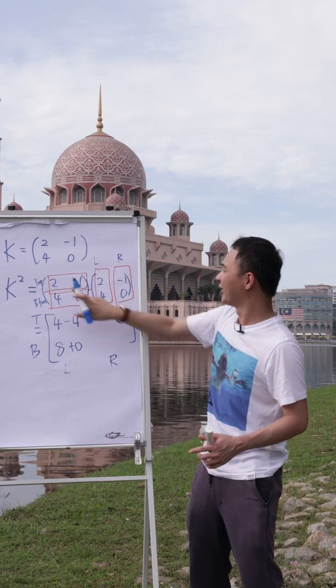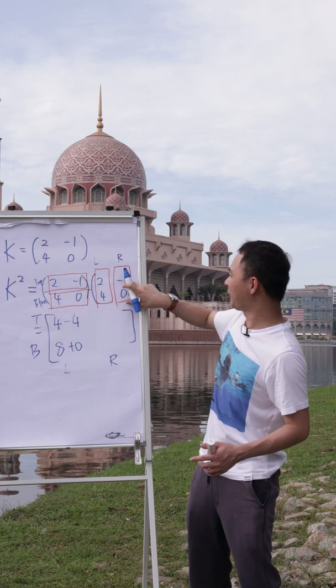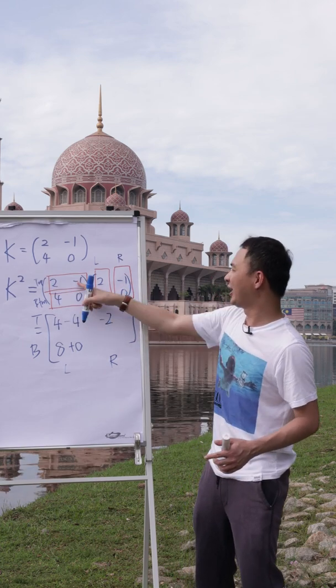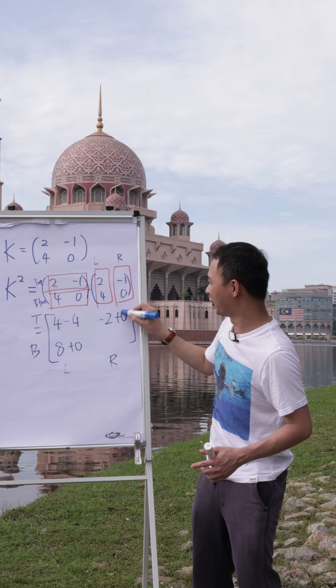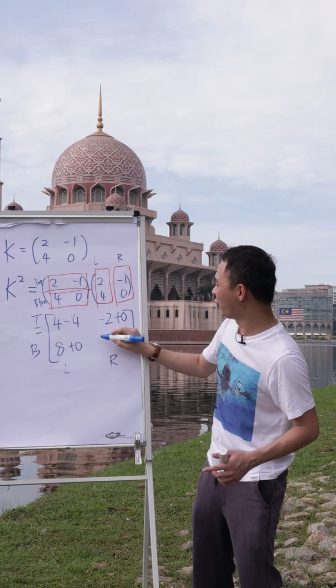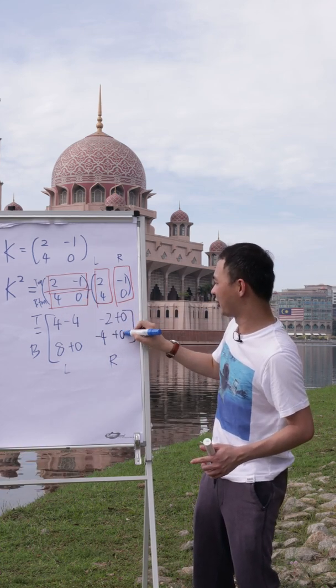Alright, then I will do the top right. So that means 2 multiplied by negative 1, which is negative 2. Negative 1 multiplied by 0, plus 0. Then 4 multiplied by negative 1, negative 4. 0 multiplied by 0, plus 0.